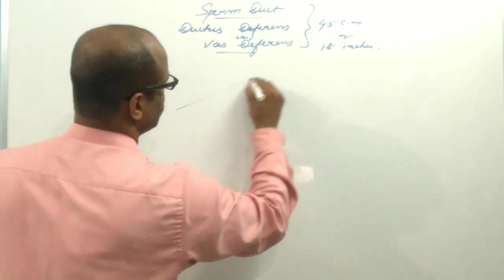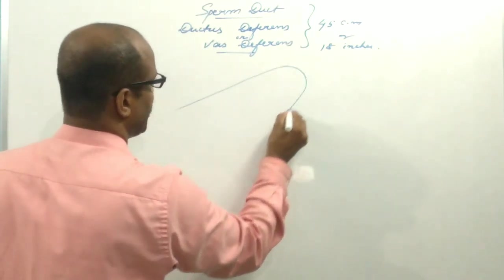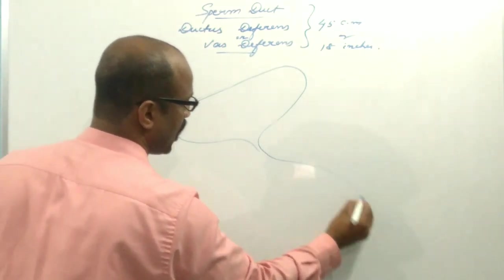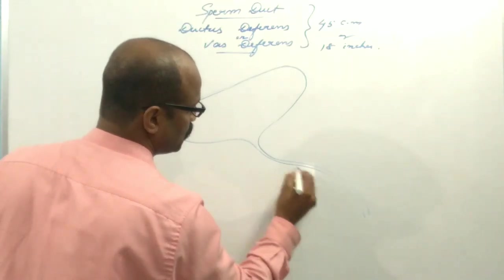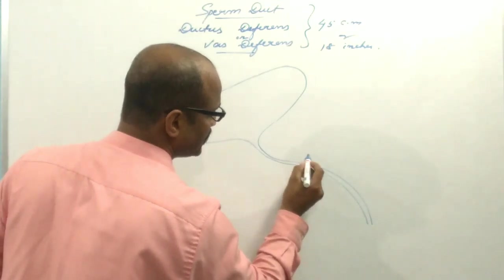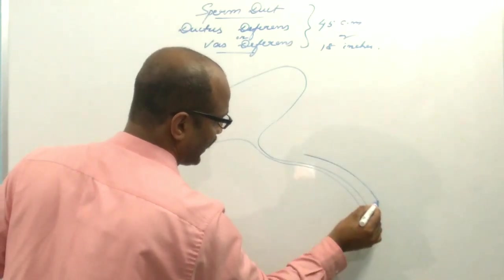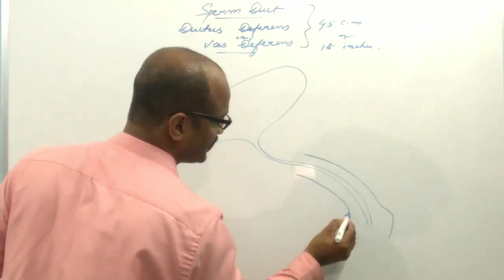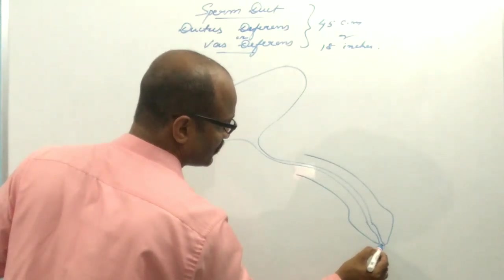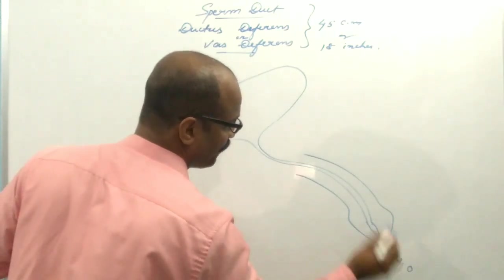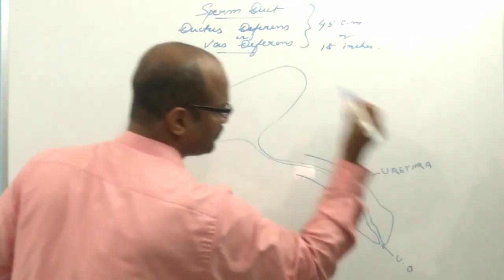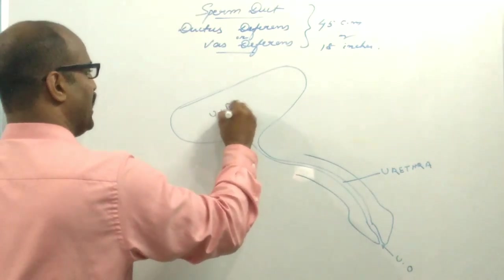This is the urinary bladder, from where a duct comes out which carries the urine to the outside, and that duct is known as the urethra. This is the penis and this is the urethra, and this is the urinary bladder.